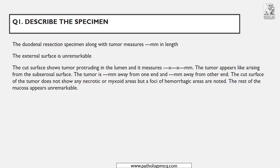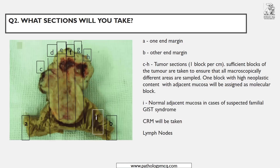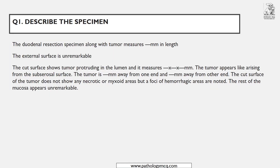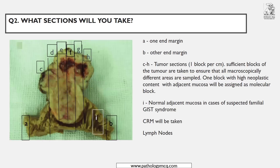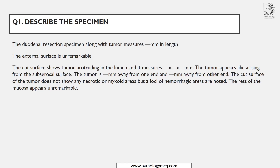Comment on the external surface even if you cannot see it clearly — write whether it is unremarkable or remarkable, and if remarkable, note any perforation. Then on the cut surface you could see a tumor protruding into the lumen. Measure it in mm. For GIST, it is important whether the tumor is arising from the sub-serosal, serosal, or mucosal layer — try to state it even approximately.